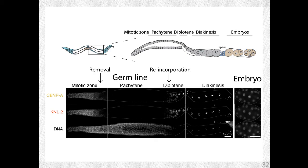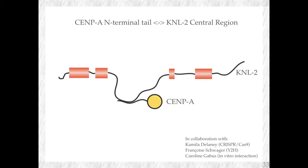This slide summarizes a lot of work where we were looking at how Sempe and KNO2 interact physically — that they interact we already knew from a previous study, but how they interact physically, we didn't know. With help from François Schwager in the Monica Gotta lab, we used yeast and bacteria to figure out that Sempe interacts through its N-terminal tail with KNO2, most likely through the central domain of KNO2. This is the information we consistently got from different types of experiments — they all confirmed it is the N-terminal tail on Sempe's side that is important for this interaction.